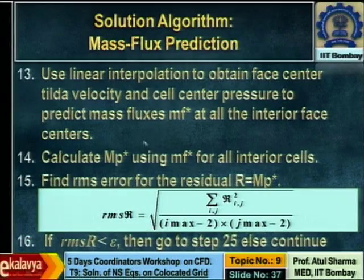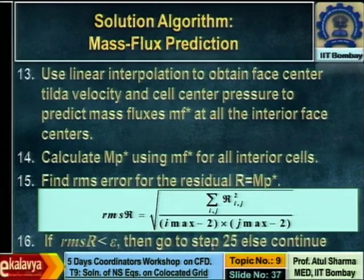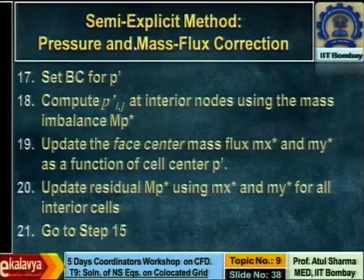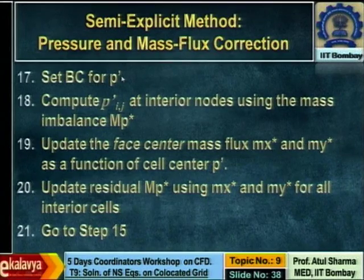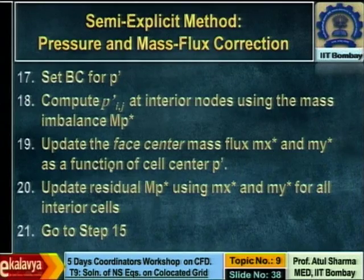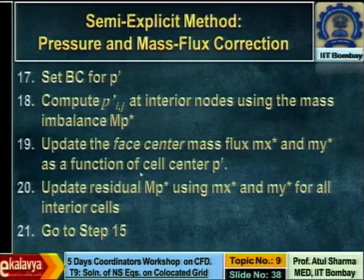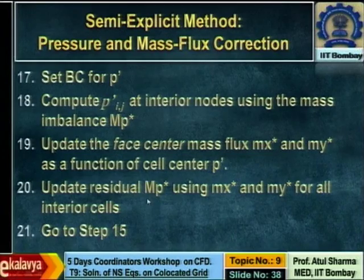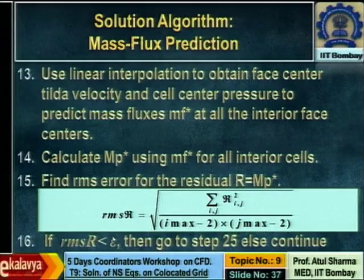If the RMS of mass imbalance is converged, exit the loop. If not, compute the pressure correction at interior nodes using the residual form of the equation, then update the predicted mass fluxes by adding the mass flux correction as a function of pressure correction. Once the updated m-star is obtained, compute the updated residue and go back to check the RMS value of the mass imbalance.